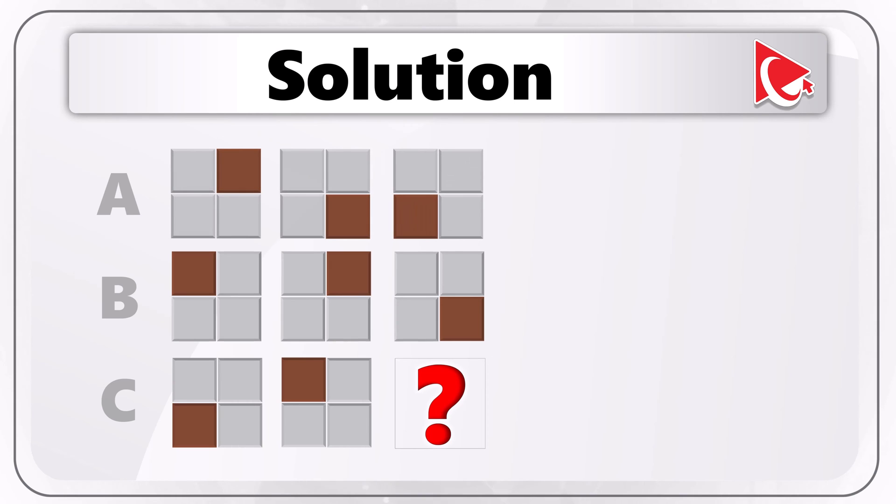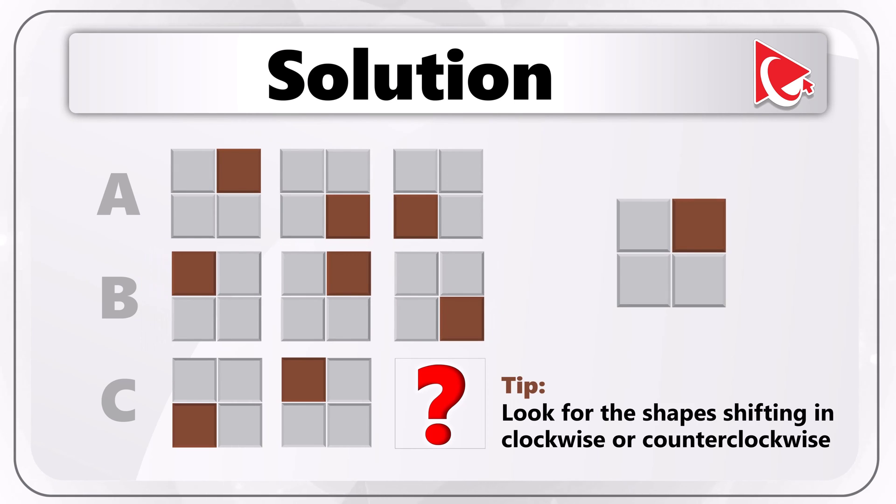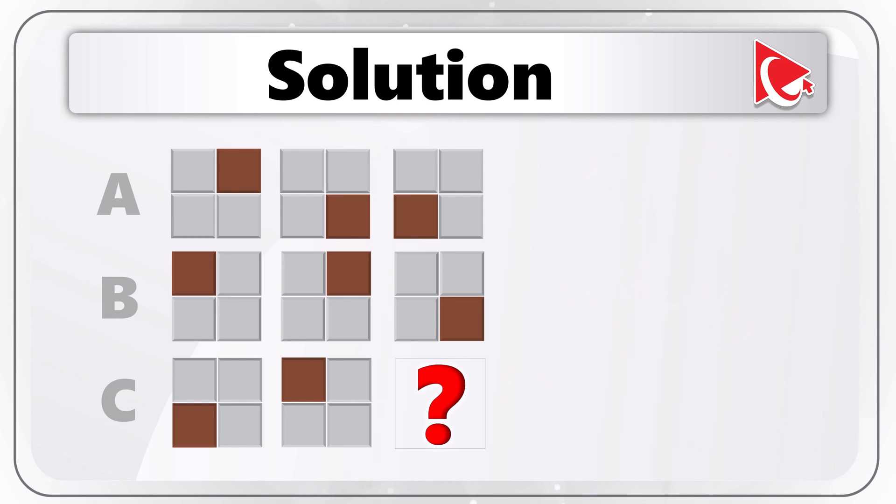If you look closely, the pattern continues in row B. One important tip for you to solve these types of problems on your own is to look for the shapes shifting in clockwise or counterclockwise patterns to determine the final solution.